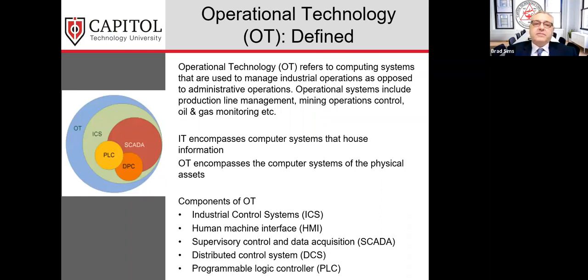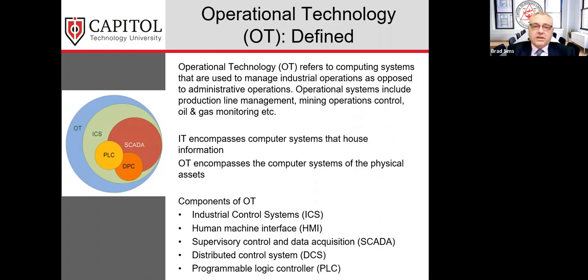Operational technology refers to the computing systems used to manage industrial operations as opposed to administrative operations. Operation systems include production line management, mining operations control, oil and gas monitoring, and so on. OT is on top of everything running these industrial facilities, and its components include industrial control systems — SCADA (supervisory control and data acquisition systems), distributed control systems (DCS), and programmable logic controllers (PLCs).